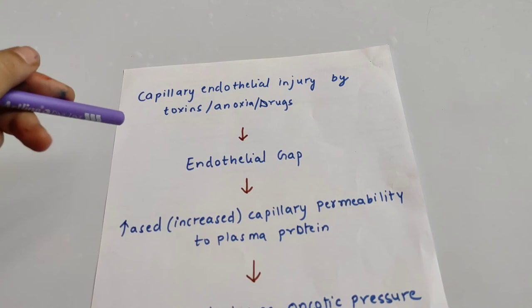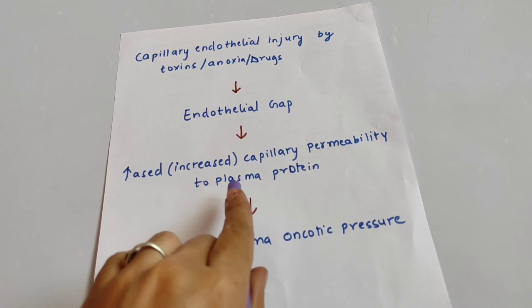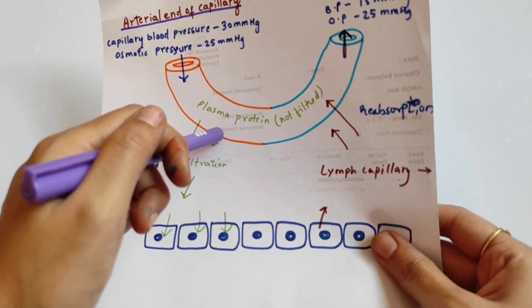What happens is that endothelial cell gaps form, capillary permeability increases, and plasma proteins leak out into the interstitial space. Normally plasma protein is not filtered, but when endothelial cells develop gaps, plasma proteins pass through. This reduces oncotic pressure, which leads to edema.